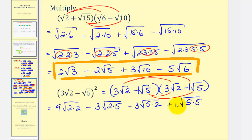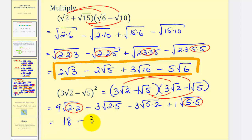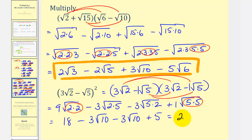Notice that two squared and five squared are perfect square factors. The square root of two squared is two, so nine times two equals eighteen. Here we have minus three square root of ten, which doesn't simplify. Then minus three square root of ten again. And the square root of five squared is just five. Combining like terms: eighteen plus five is twenty-three, and negative three minus three equals negative six, giving us minus six square root of ten. So our final answer is twenty-three minus six square root of ten.